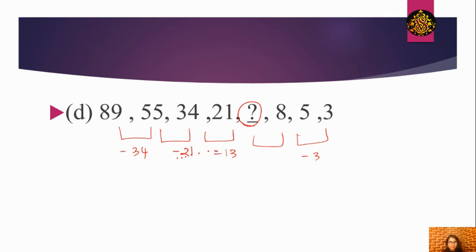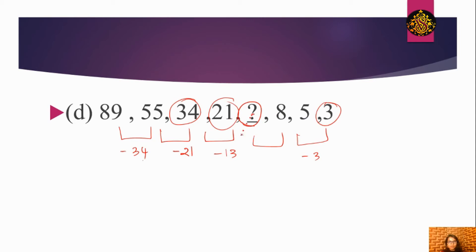The differences from the known terms are 34, 21, 13, and 3. Looking at the pattern: 89−55=34, 55−34=21, and 8−5=3. For the missing term, 34−21=13, so the missing value is 13. If we take 34 minus the unknown we get the next difference. Therefore 13 is the answer.